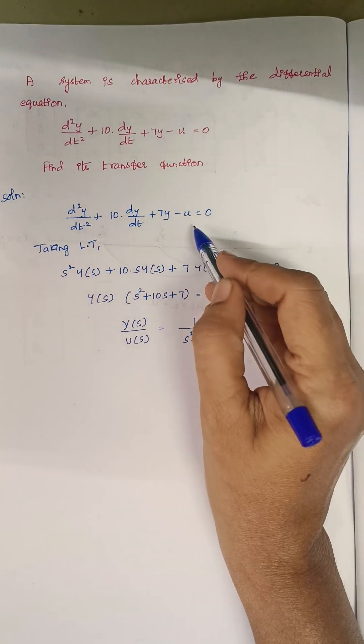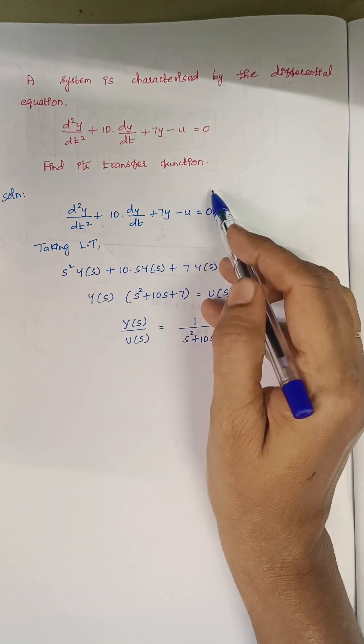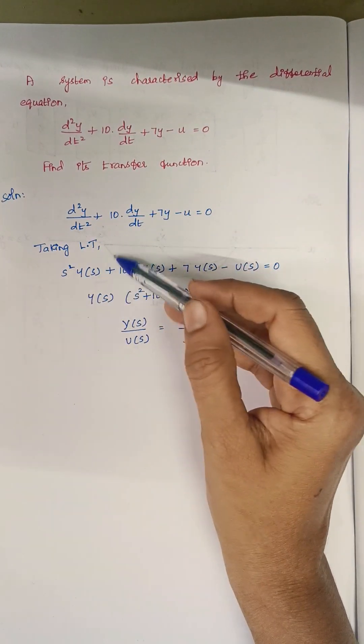So here u is nothing but our input and the rest of the terms which have y, they constitute the output. So the first step is taking Laplace transformation.